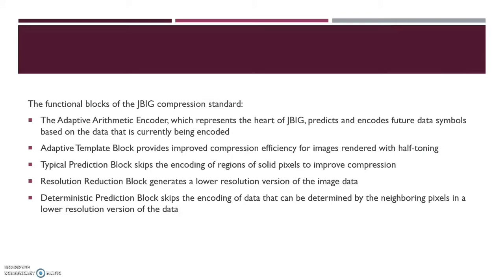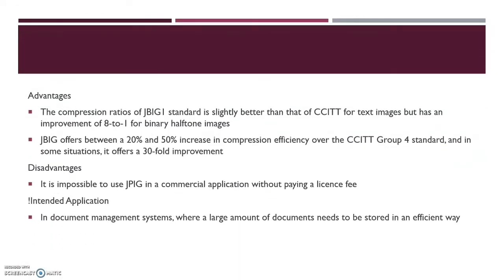A resolution reduction block is used because we are compressing to a lower resolution version of the image, and the deterministic prediction block helps us understand where the neighboring pixels in a lower resolution image will be. On a good day, it improves the compression by 30-fold, and even in worst case scenarios it gives at least 20 to 50% improvement. That disadvantage though — it's a licensed product; you can't use it freely, and that is why it does not meet the intended application it was made for.